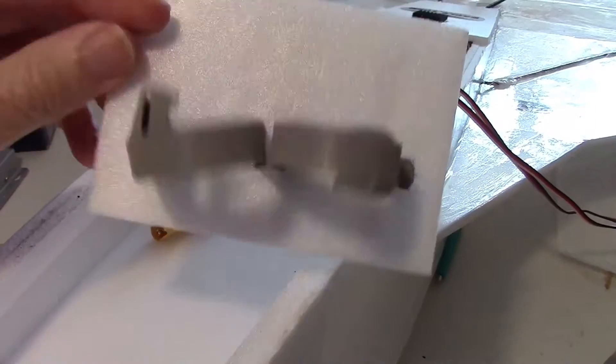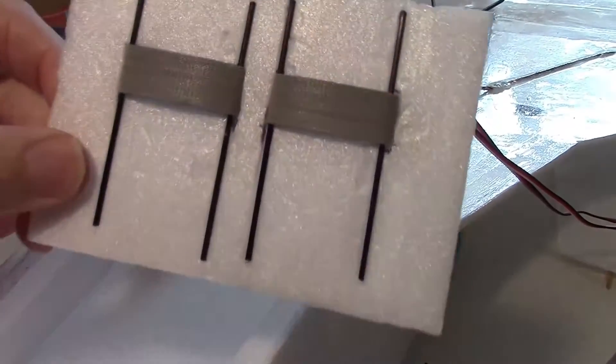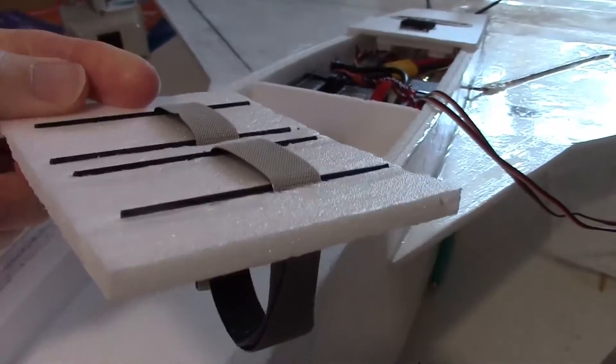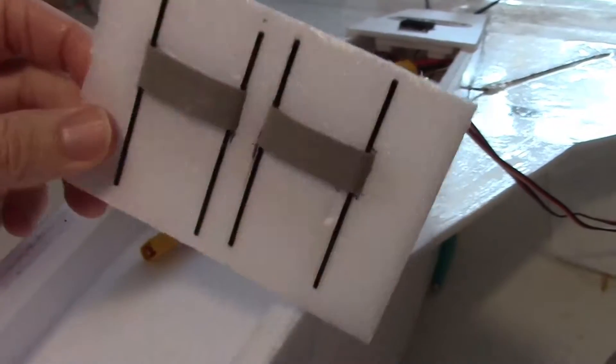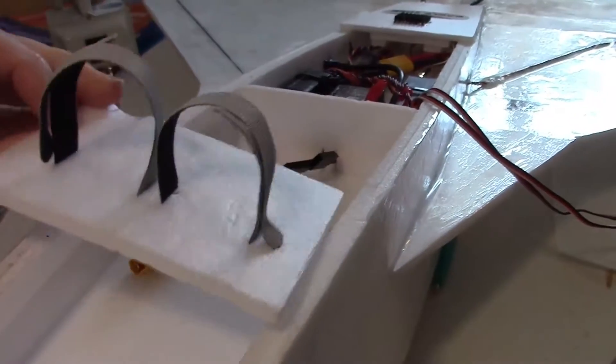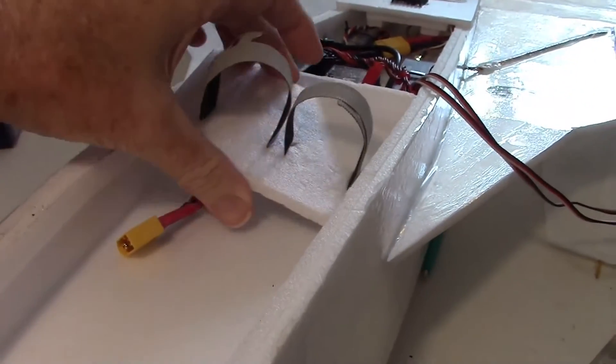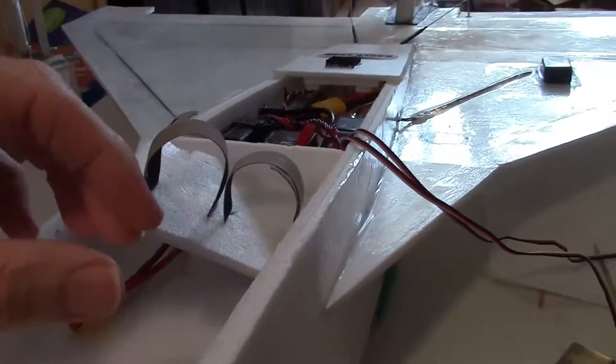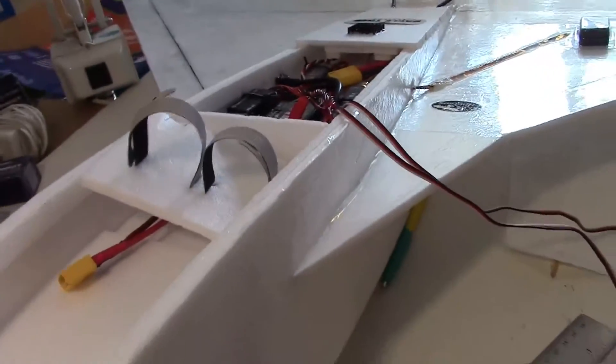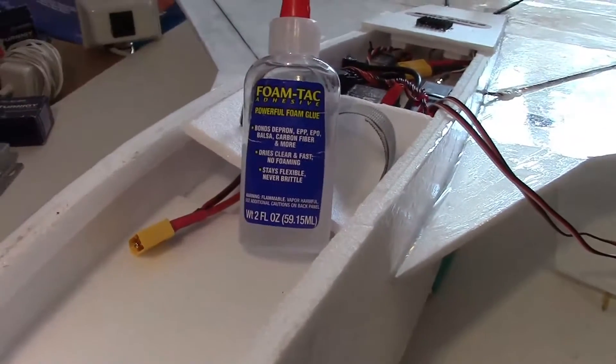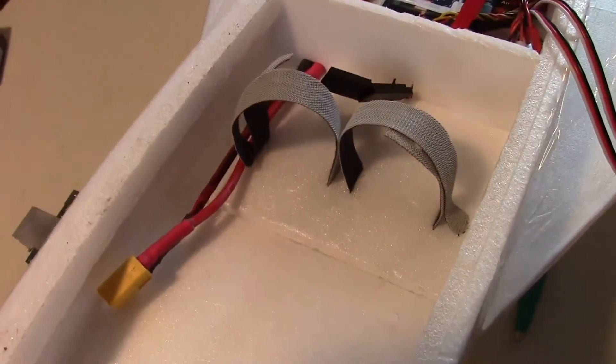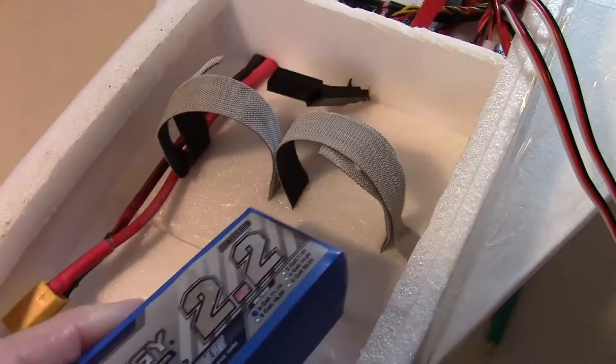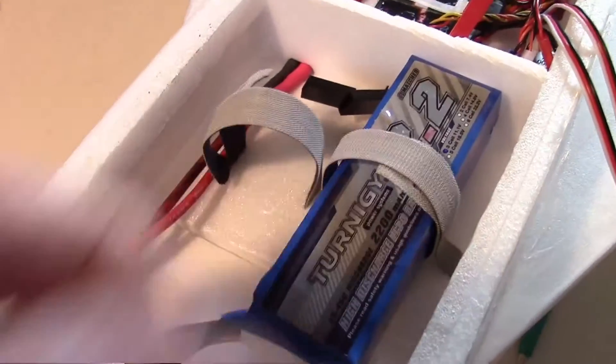So here's my battery straps that I put on the piece of foam. Now I've reinforced it underneath with some carbon fiber rods to keep the straps from pulling through the foam. And that is going to go right in here. So I'm going to glue that in with some of the foam tack. So it goes in like that, and then the batteries, of course, go right in here, and you can strap them down.